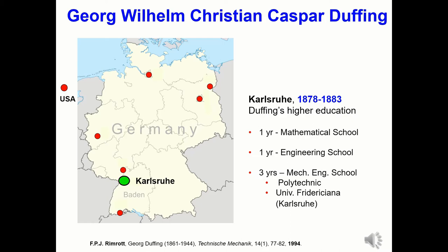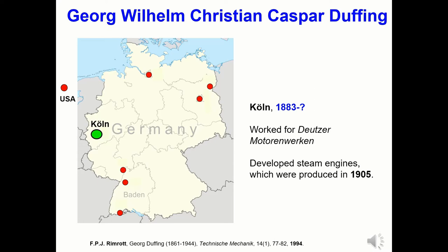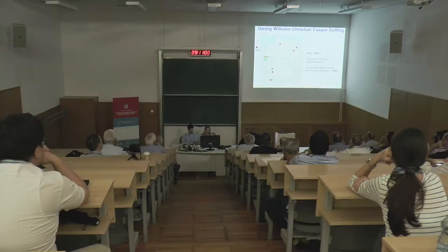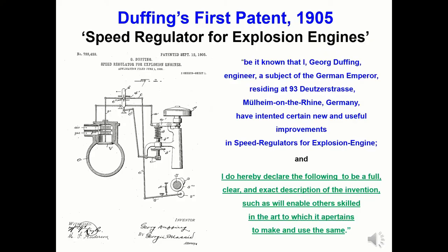Between 1878 and 1883, Duffing undertook his higher education, spending one year at a mathematical school, one year at an engineering school, and three years at the mechanical engineering school at the Polytechnic — which today is the University Friedrichiana in Karlsruhe. After graduating, Duffing moved to Cologne and worked for Deutsche Motorenwerken, where he developed steam engines. He was also involved in other engineering work; here is one of Duffing's patents, for a speed regulator registered in the United States in 1905.